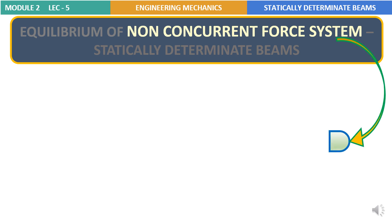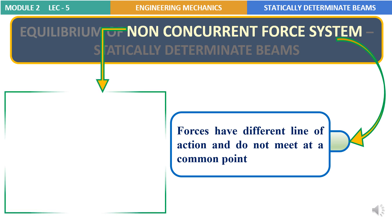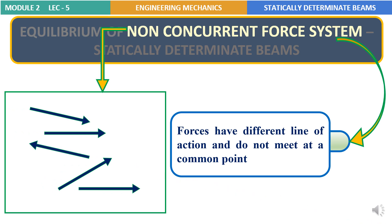We know that two or more forces acting on a body constitutes a force system, and if these forces do not meet at a common point — or in other words, if the line of action of all these forces do not meet at a common point — then such a force system is referred to as a non-concurrent force system. If you observe here, we have five forces each having different lines of action and these lines of action do not have a common point of concurrency.